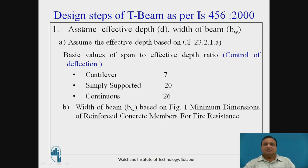So let us discuss the design steps of T-beam as per IS 456-2000. Now first of all, we have to assume the effective depth D and the breadth of web i.e. breadth of beam BW. So assumption of effective depth D shall be based on clause number 23.2.1a of IS 456. So basic values of effective span depth ratio given are for cantilever it is 7, for simply supported 20 and continuous it is 26. So based on if it is simply supported, we have to take 20 L by D ratio or if it is continuous, we are supposed to take 26. If it is cantilever 7.